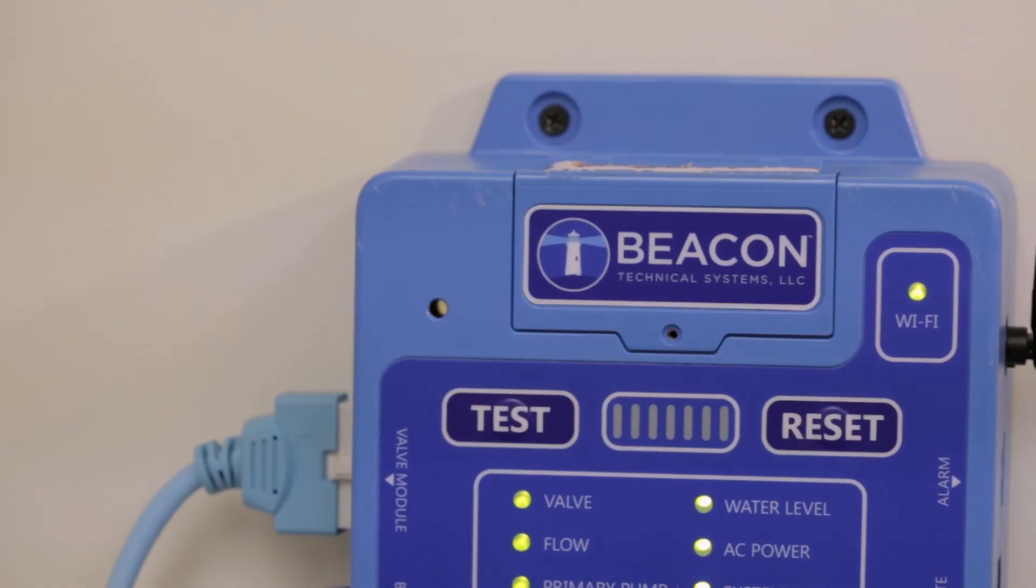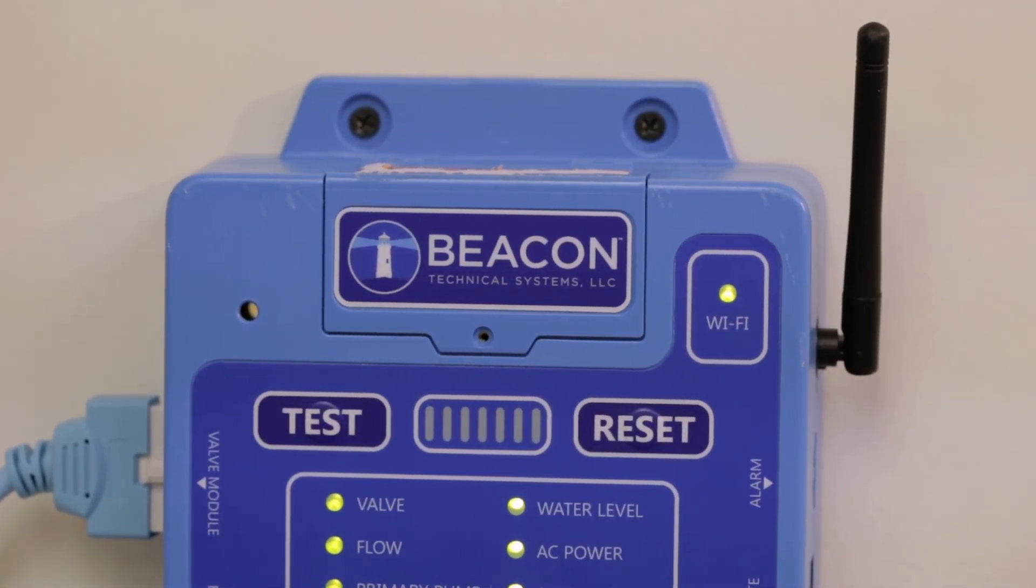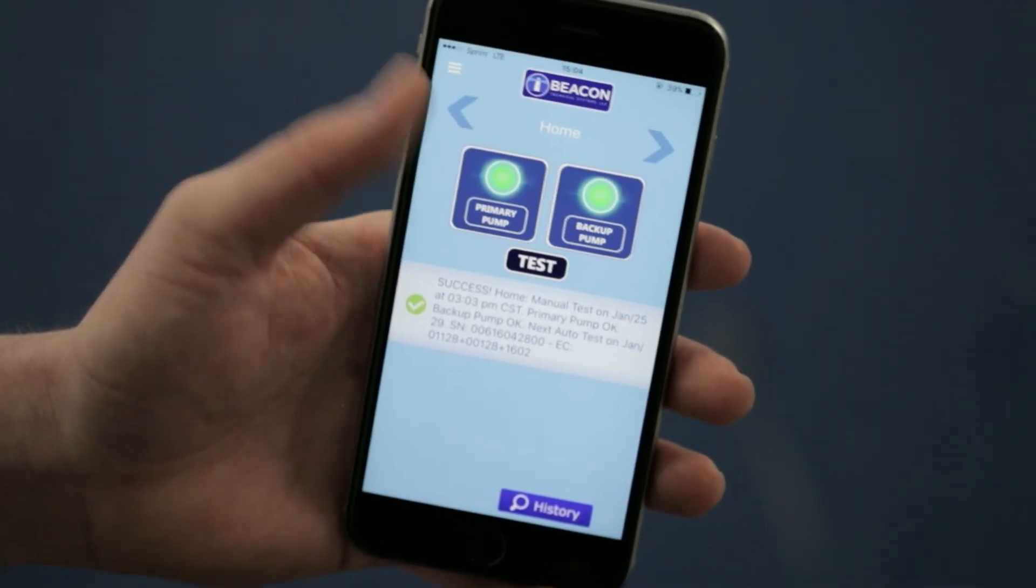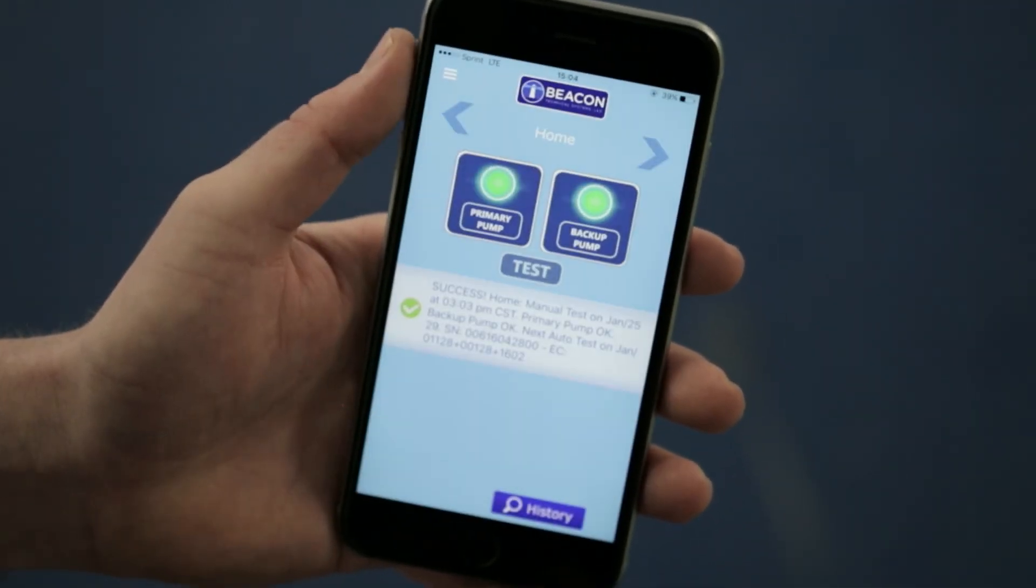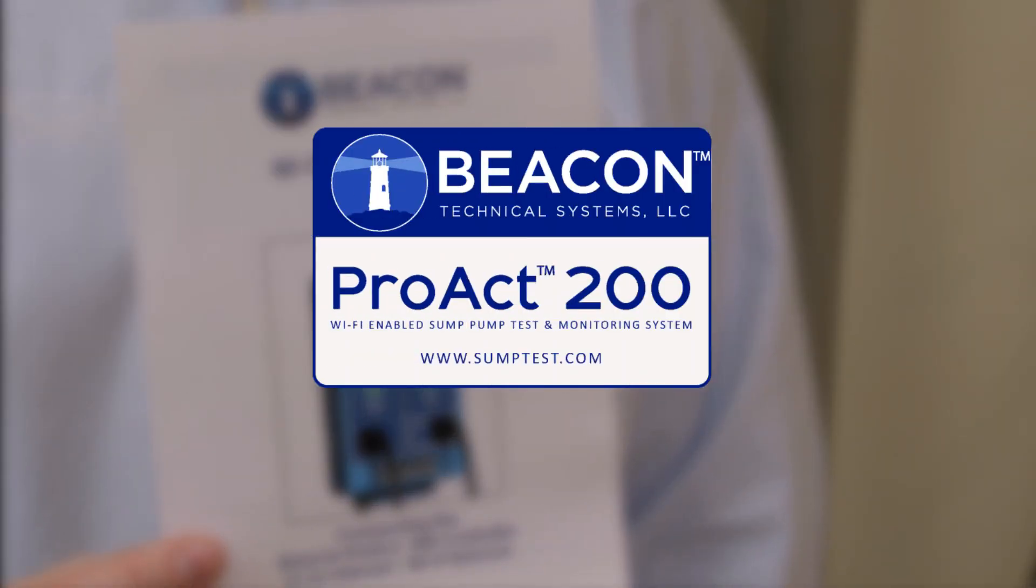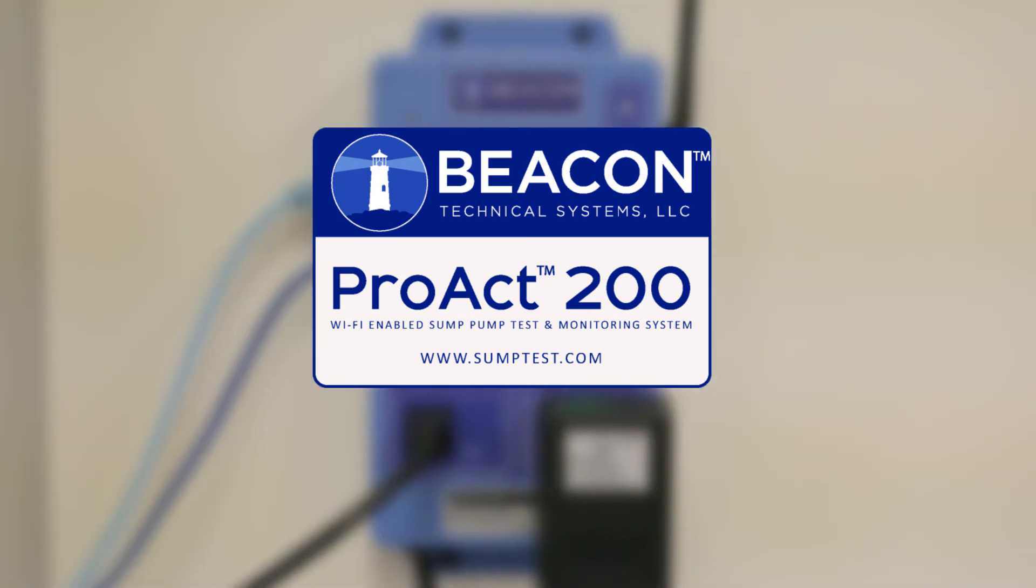You should now initiate a manual test by pressing the test button. Finally, please note that the ProAct 200 is Wi-Fi enabled to allow for remote monitoring and testing of the sump pump installation. Please direct the homeowner to the Wi-Fi setup guide that comes in the box or is available at sumptest.com. Homeowners can register the ProAct 200 at sumptest.com to initiate remote monitoring.